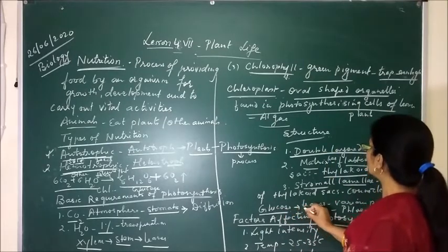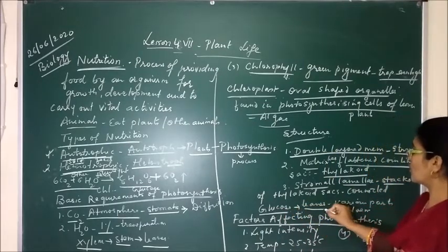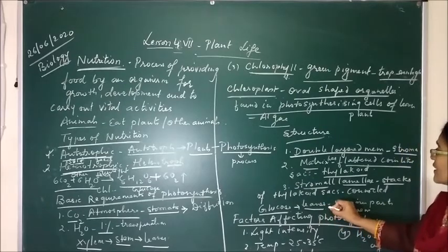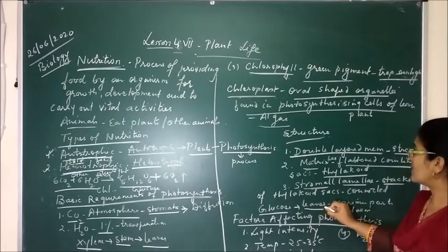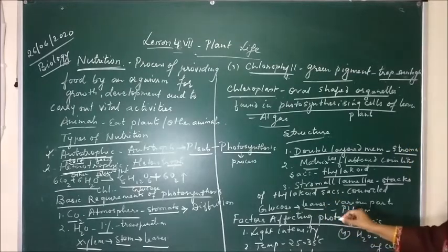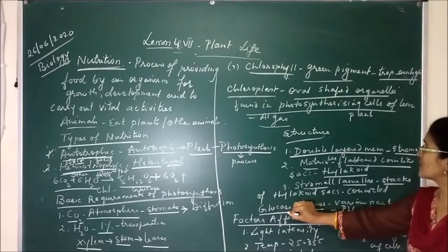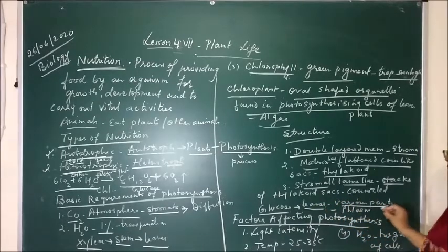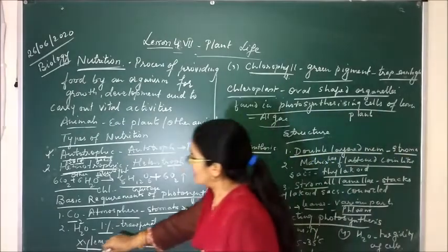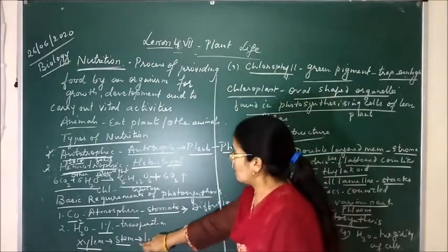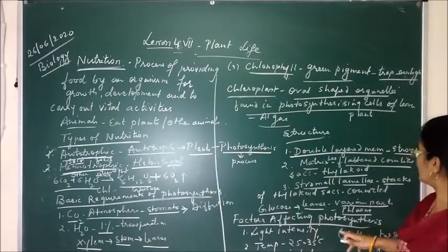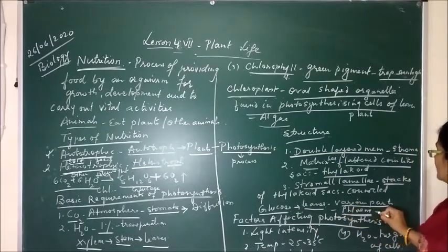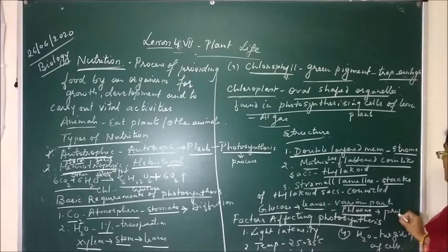The glucose prepared by plants is mostly produced in the leaves. That is why leaves are called the kitchen of the plant, because they contain the green pigment chlorophyll and prepare food. This glucose is then transported to various parts of the plant by a conducting tissue called phloem. Phloem transports the prepared food from the leaves to different parts of the plant for various activities.